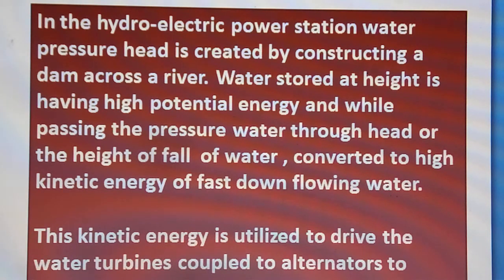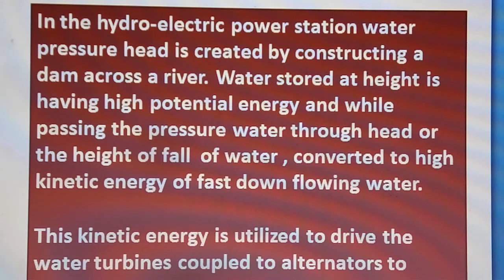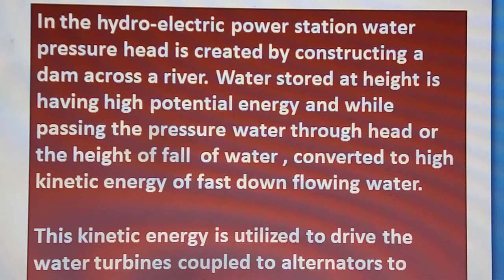In the hydroelectric power station, water pressure head is created by constructing a dam across a river. Water stored at a height has high potential energy. As it passes through the pipe, the high potential energy is converted to pressure water, and the height of fall of water is converted into high kinetic energy of fast down-flowing water. With this vigorous energy, the water flows down and this kinetic energy is utilized to drive the water turbines, which rotate at a faster rate, coupled to alternators to generate electrical power.